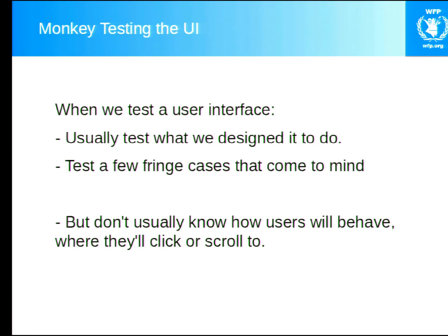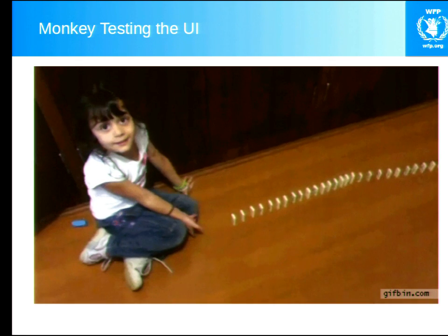Let's start at the top of the stack with the user interface and monkey testing with Gremlins. When we design a user interface, we usually test what it's designed to do — we test the inputs we expect the interface to receive, and maybe some fringe cases where the input is incorrect. But you don't actually know how the user will behave when they use your interface: where they're going to click, scroll, or zoom on mobile devices. My normal experience is to receive a specification, implement an interface — say a form — implement it, test for basic functionality, run unit tests or end-to-end tests, they all pass, and you're done.